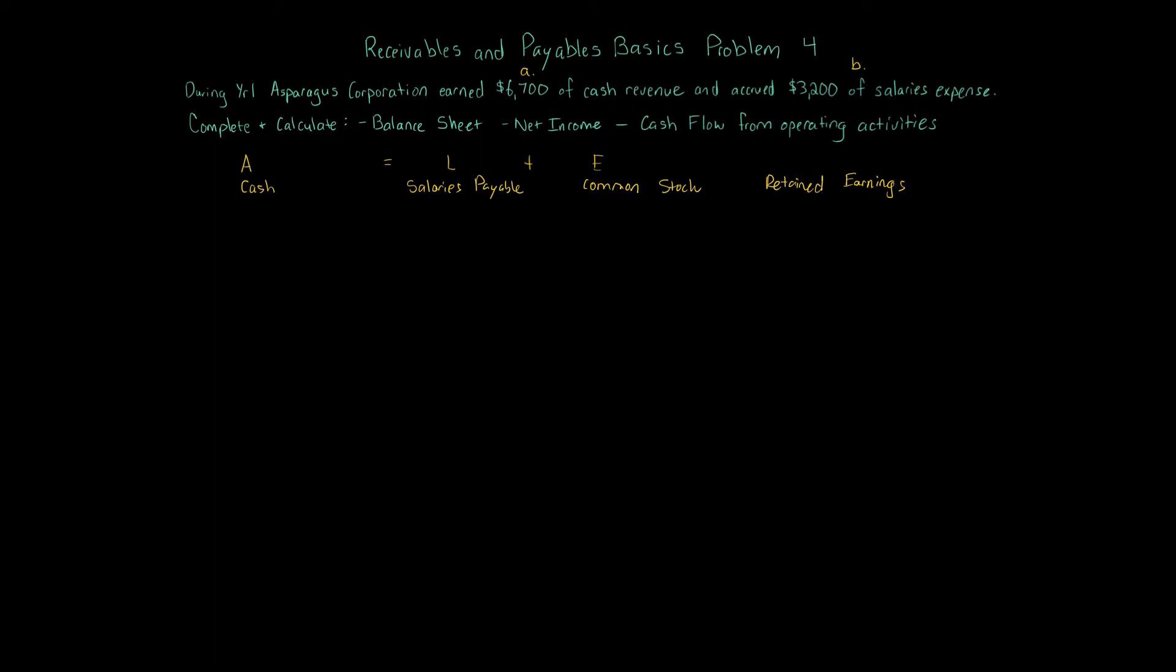$6,700 of cash revenue. That means that cash in transaction A, cash is going up by $6,700. Of course, we have an increase on the left of $6,700. We have to have an increase on the right. No liability effect. No common stock. We do have retained earnings. We have an increase in retained earnings of $6,700. How? The specific account in retained earnings is going to be revenue.